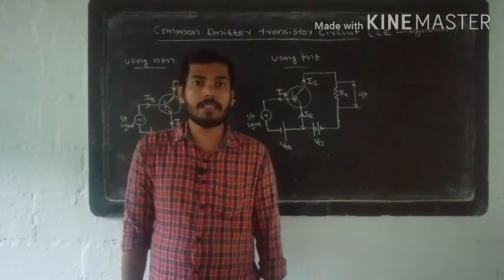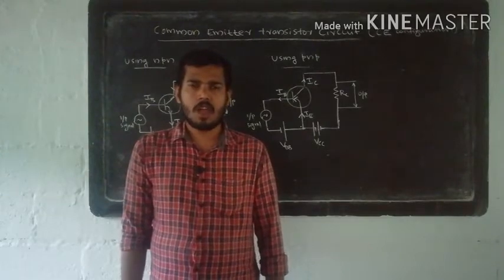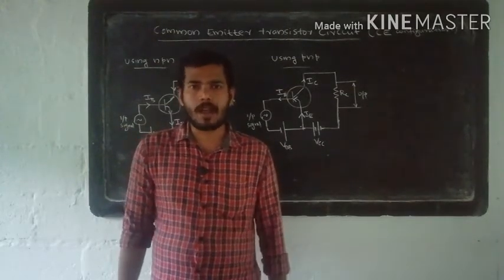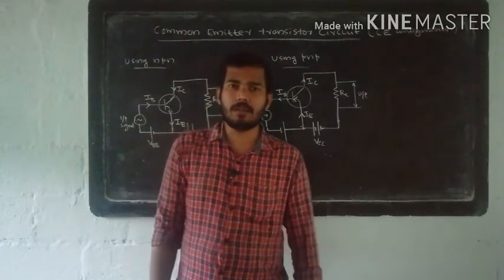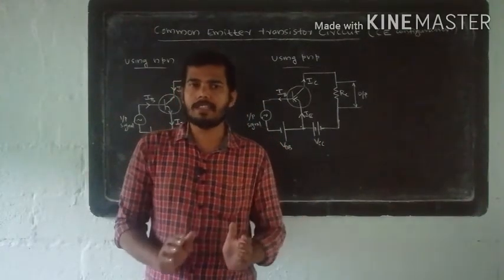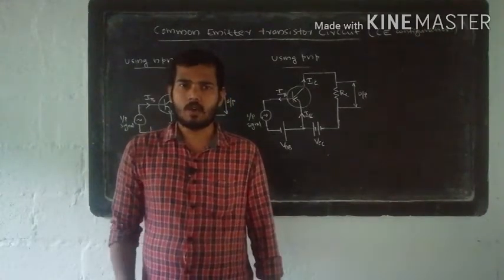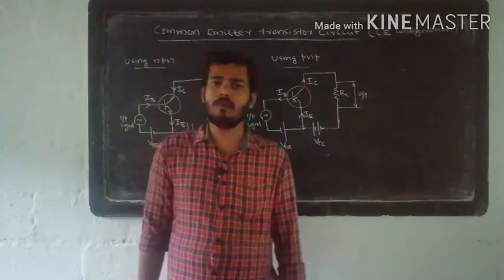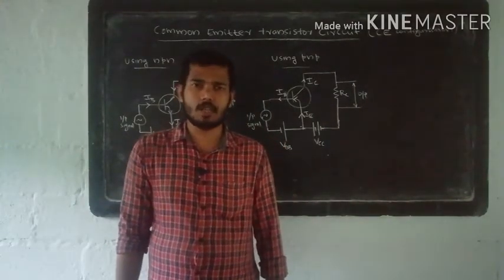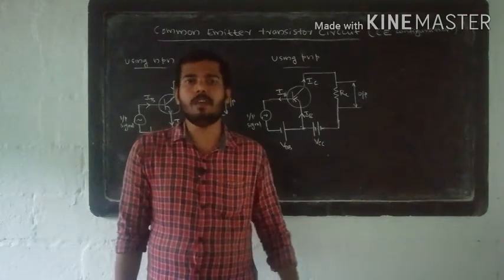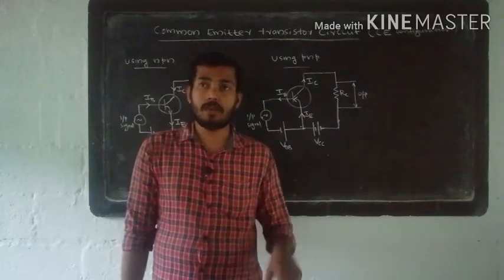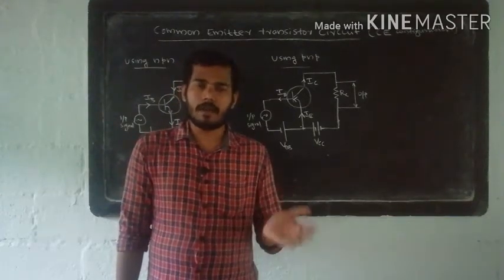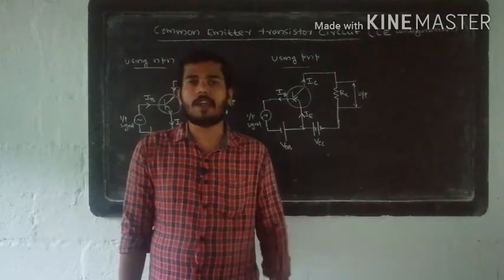In this class, we will discuss Common Base Transistor Circuits. We will look at the input, output sections in the base terminal of the transistor. We will look at the C-B configuration, the collector current expression, the amplification factor, and the circuit input-output characteristics. That is why we are going to study the Common Emitter Transistor Configuration.